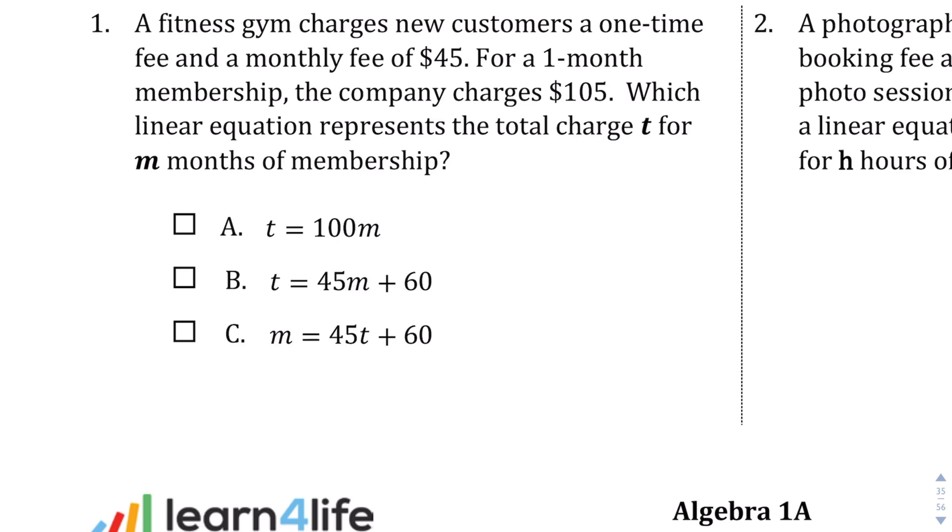What do I mean by that? Well, let's write this situation out. A fitness gym charges new customers a one-time fee and a monthly fee of $45. So there's two things going on: there's a one-time fee, and then there's a monthly fee of $45. For a one-month membership, the company charges $105. Whoever wrote this problem conveniently left out the one-time fee. All they tell us is that after one month, this is how much you pay.